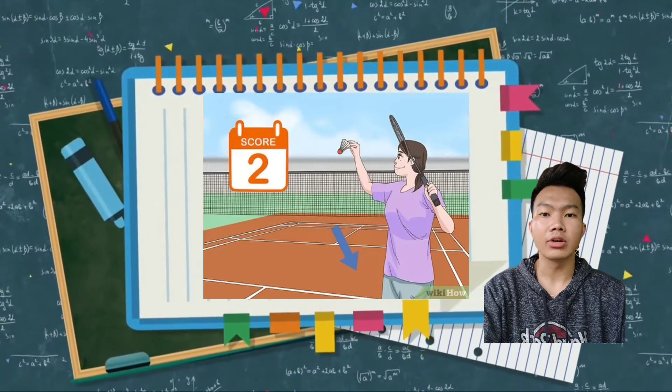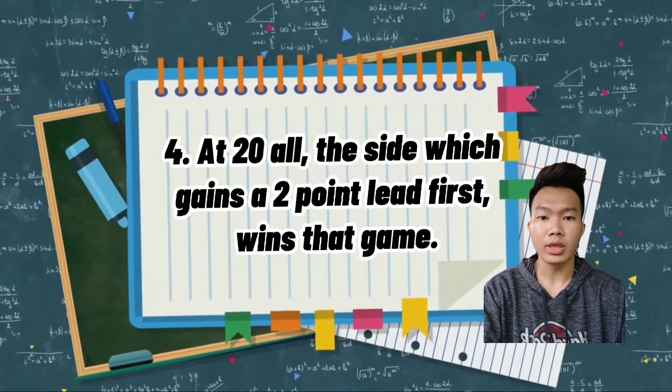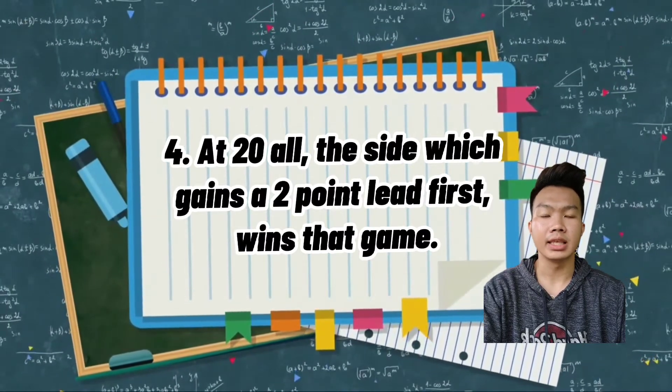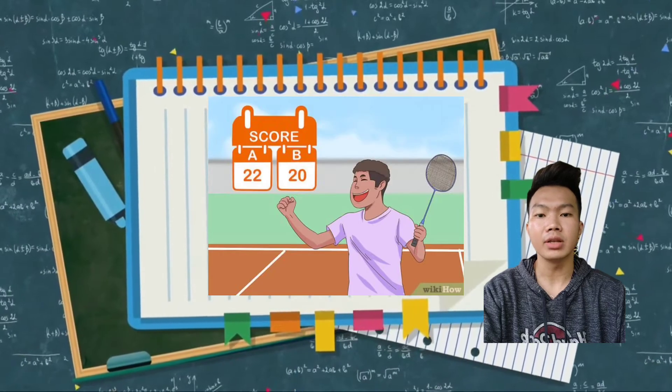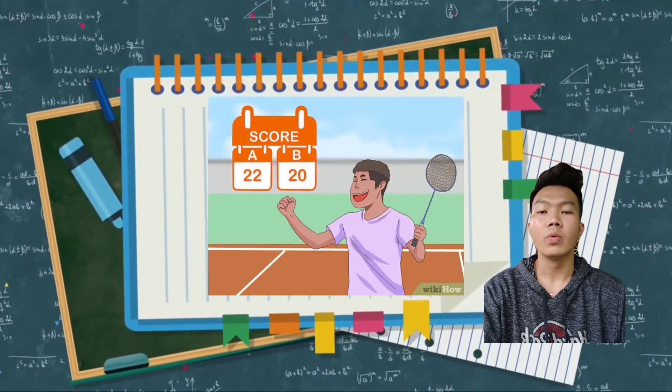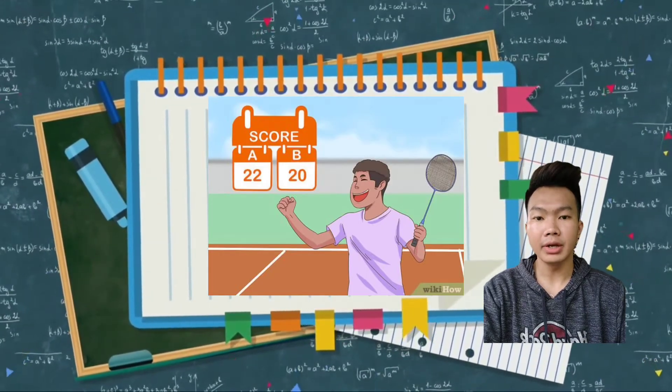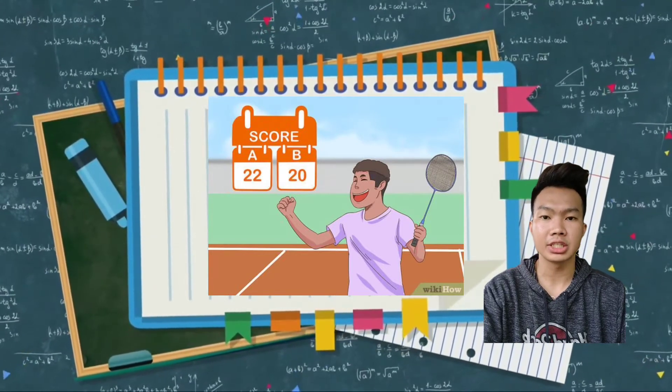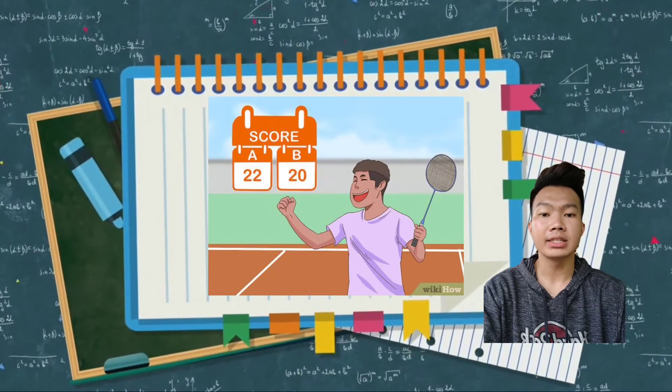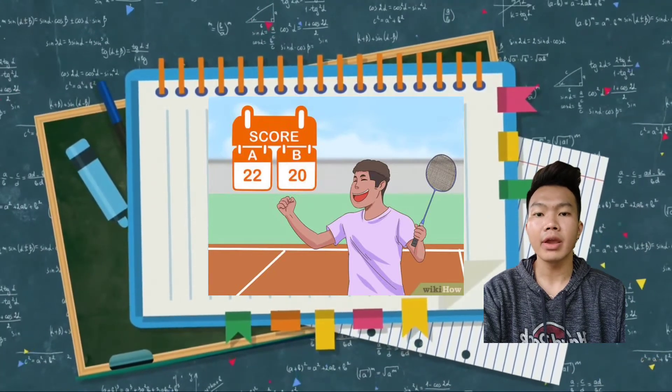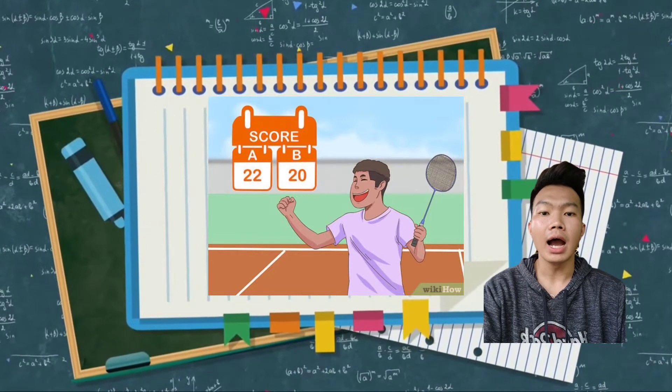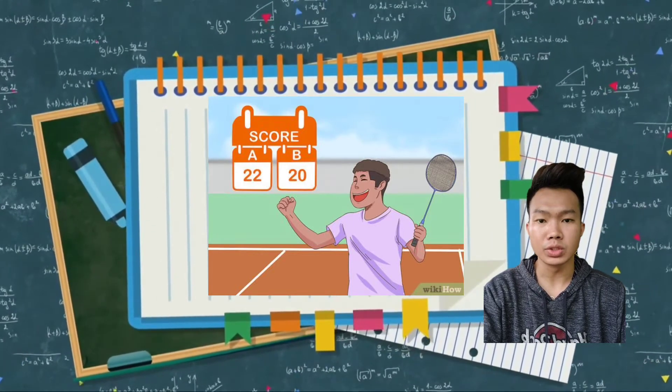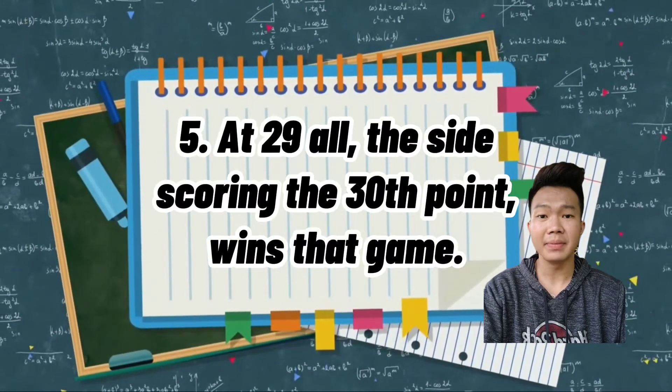At 20 all, the side which gains a two-point lead first wins that game. The tie is inevitable in a game in badminton when each player or pair ties for 20 points. The first to get two points will be the winner in that match. Kapag nag-tie sa score na 20 ang player or pair sa both party, ang mananalo ay kung sino ang unang makakakuha ng two consecutive points.